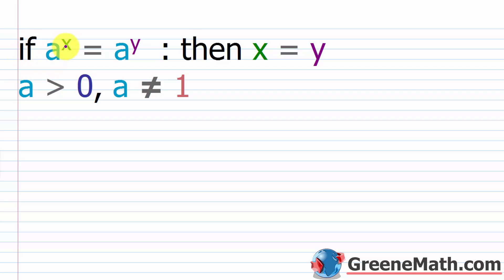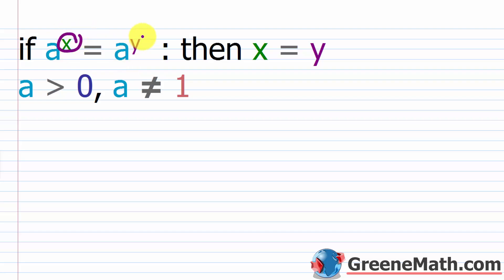So if a to the power of x equals a to the power of y, then we can say x equals y. As long as this base a is greater than zero and not equal to one, if these bases are the same — meaning I have the same number on both sides — then I can just set x equal to y and solve. If you have the same base, set the exponents equal to each other and solve the resulting equation.